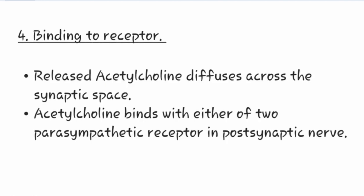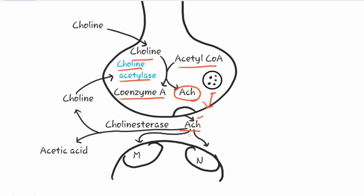The fourth step is binding to the receptor. Released acetylcholine diffuses across the synaptic space and binds with either of the two parasympathetic receptors in the post-synaptic nerve. The two parasympathetic receptors are muscarinic receptors and nicotinic receptors.